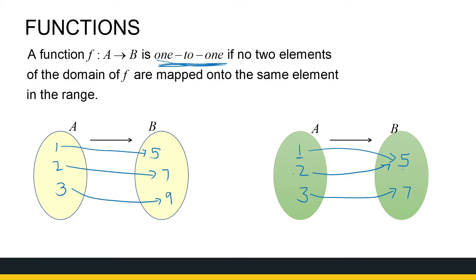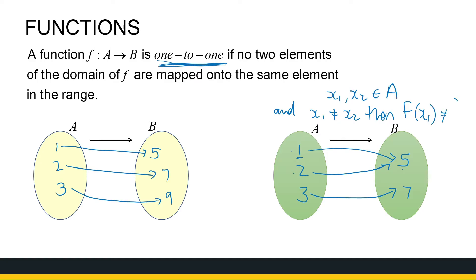So if we look at x1 and x2, if they're both in the domain and they're different elements, then their images cannot be equal — they cannot be mapped onto the same element of the range. So we want a function to be one-to-one before we look at the inverse of the function.